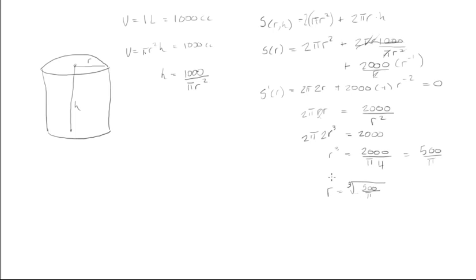Now we plug this r value into our formula to get the height dimension. h = 1000 / [π(∛(500/π))²].